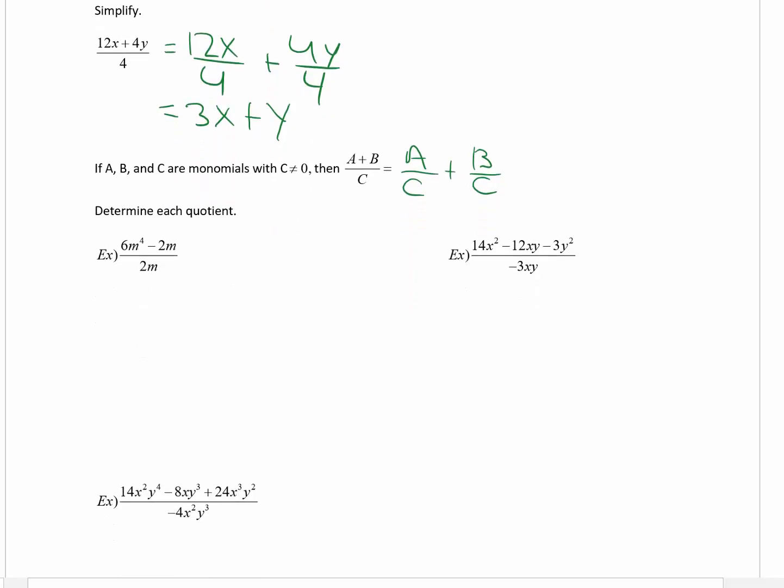Let's determine each quotient. Because I only have one term in the denominator, I can separate them. Six divided by two is three. When you divide exponents with the same base, you subtract the powers: four minus one, that's three, so that's m cubed. And 2m divided by 2m, that is one, not zero.